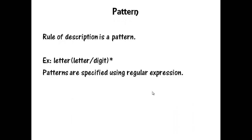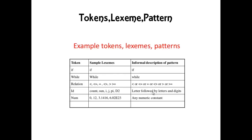What is a pattern? A pattern is a rule that describes the set of strings associated with tokens. For example, letter(letter | digit)* is a pattern to symbolize a set of strings which consists of a letter followed by a letter or digit. Patterns are specified using regular expressions. Consider the following examples for token, lexemes, and pattern.